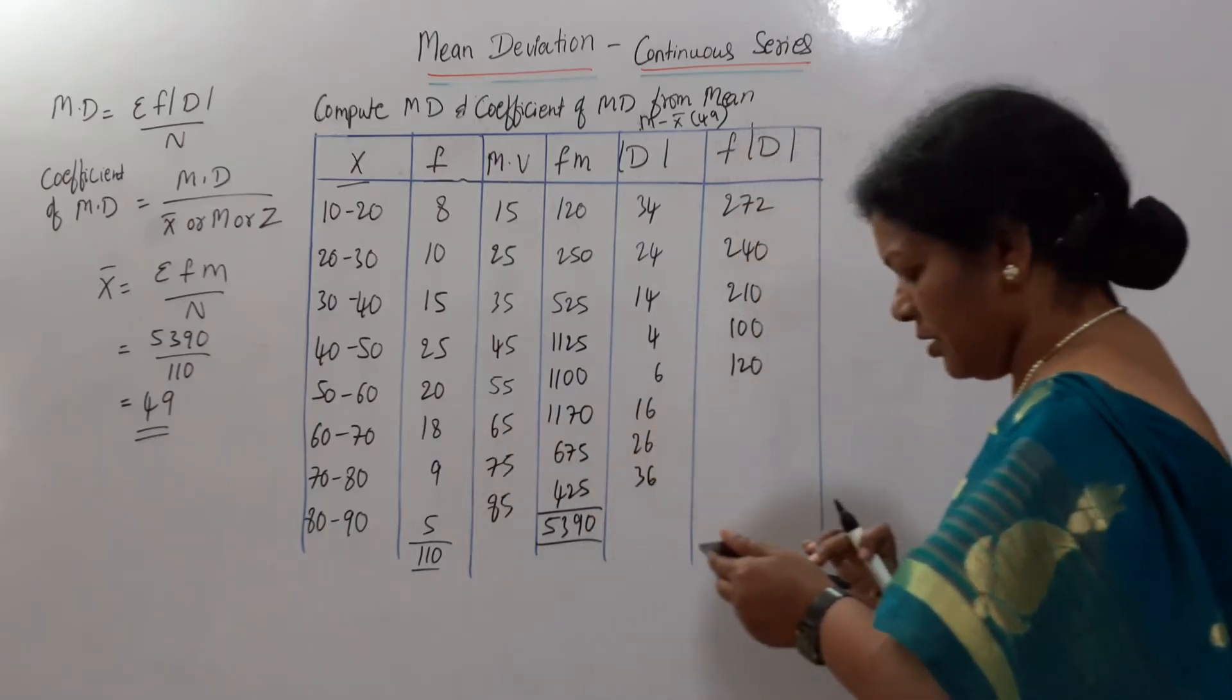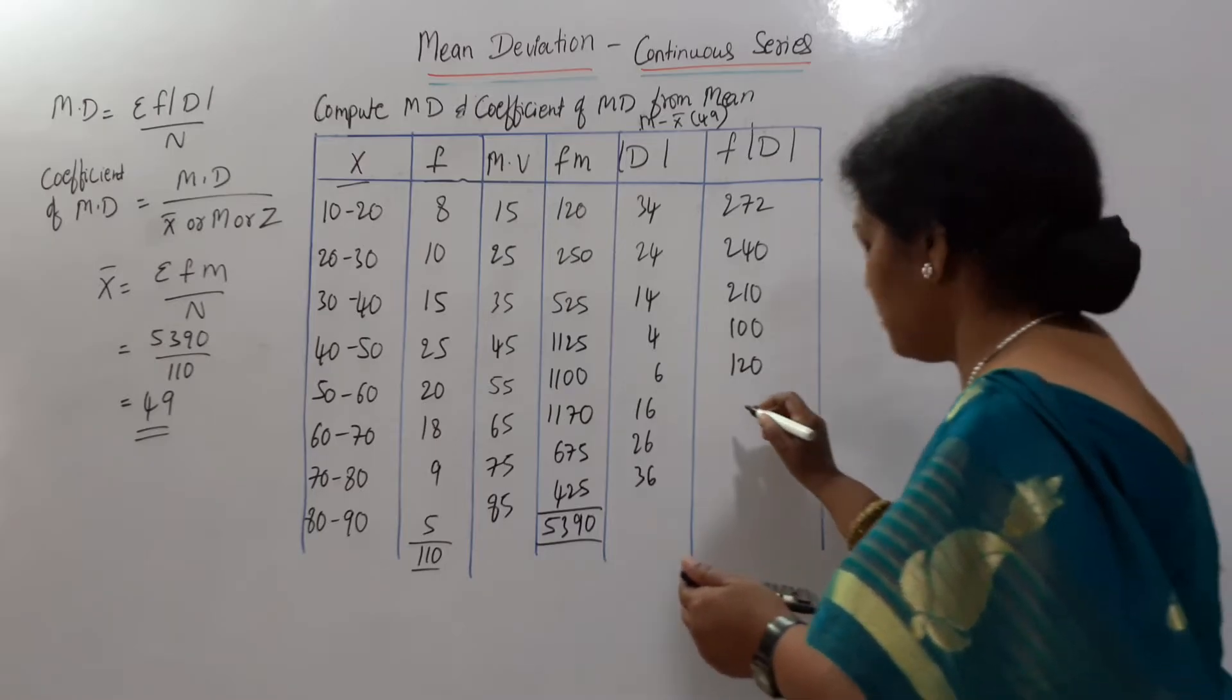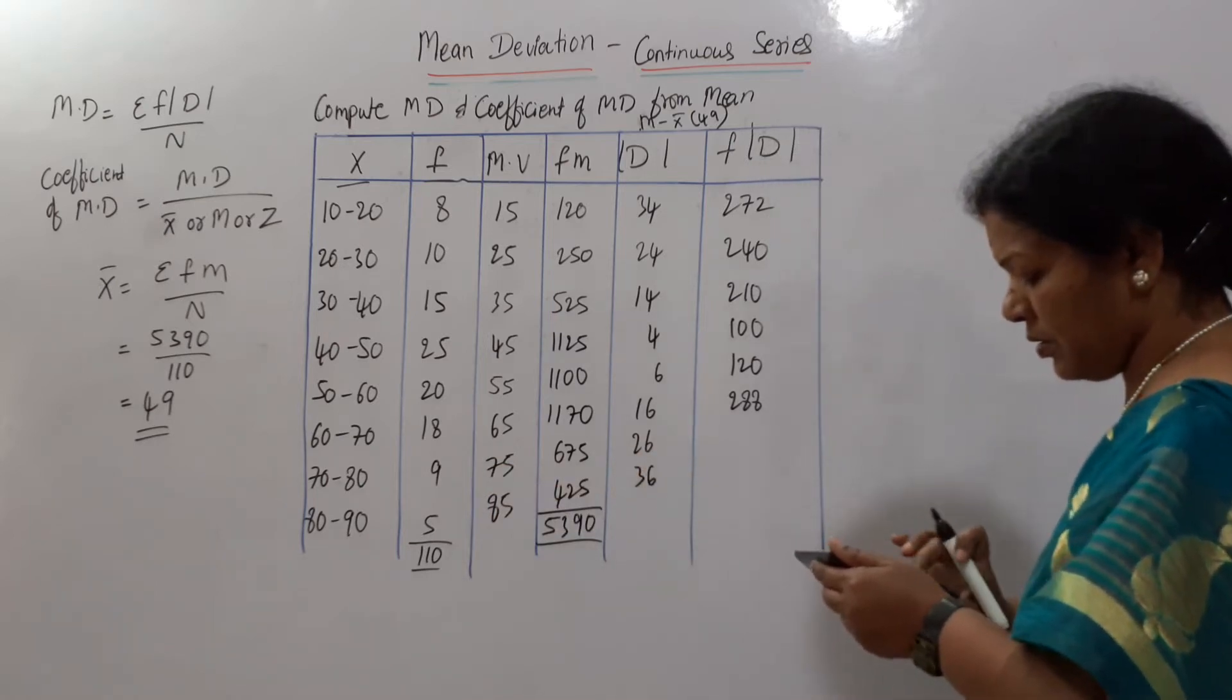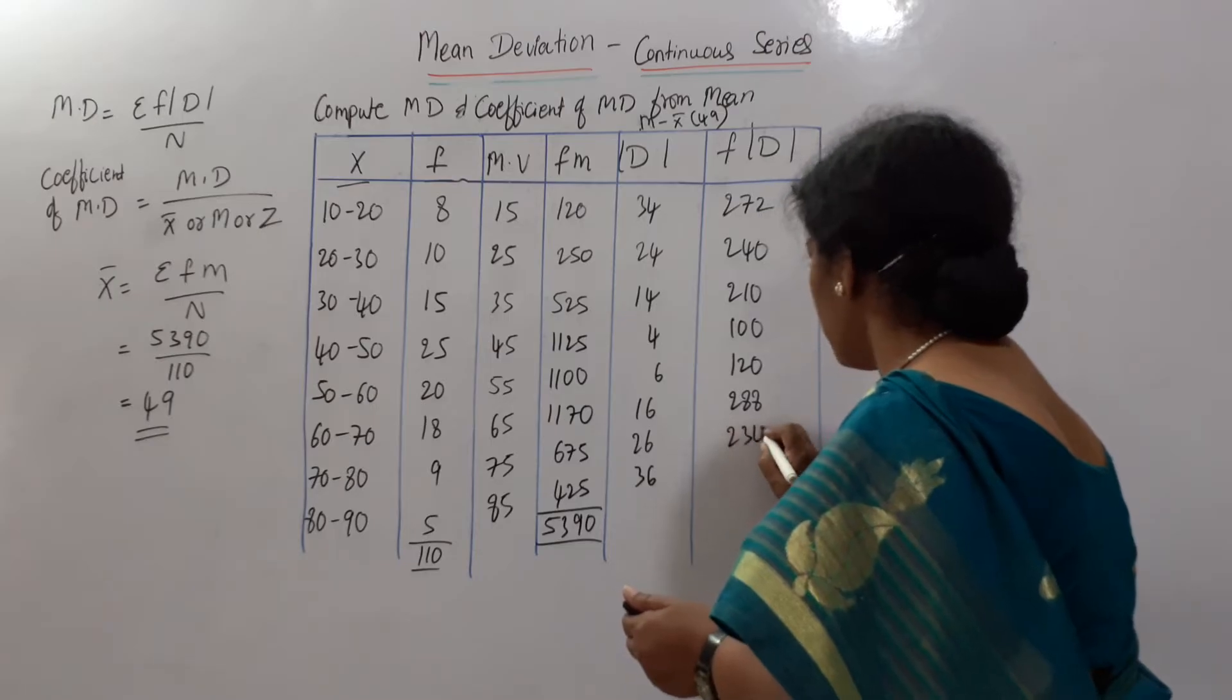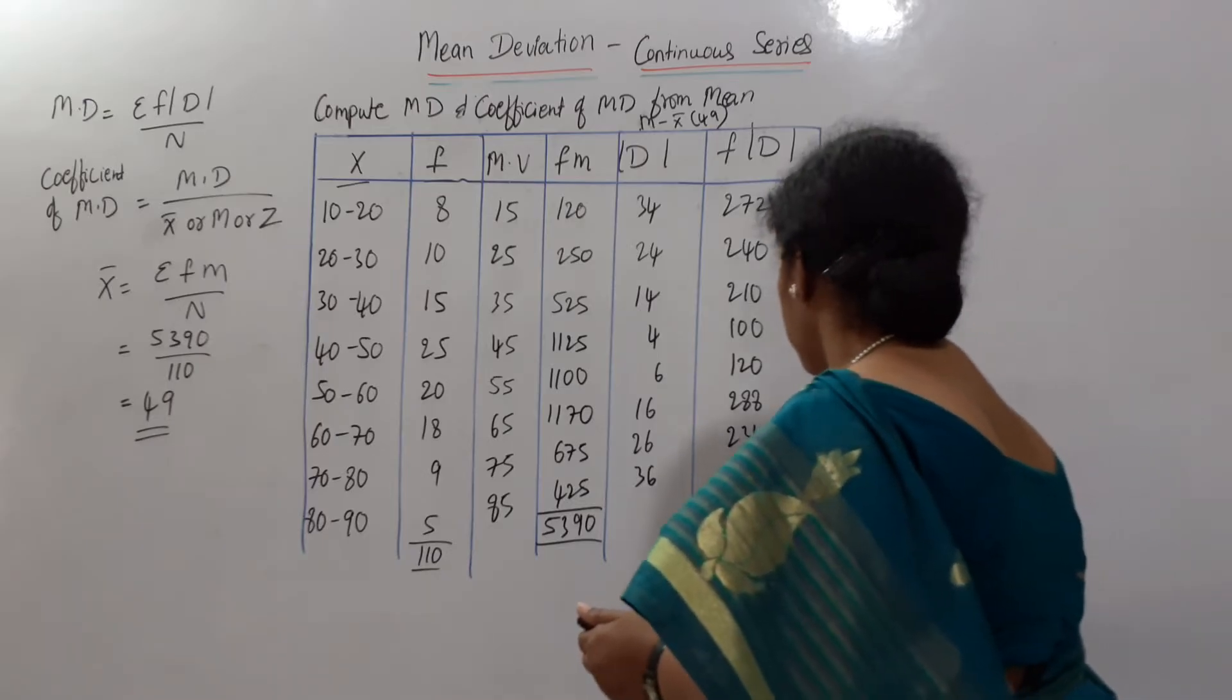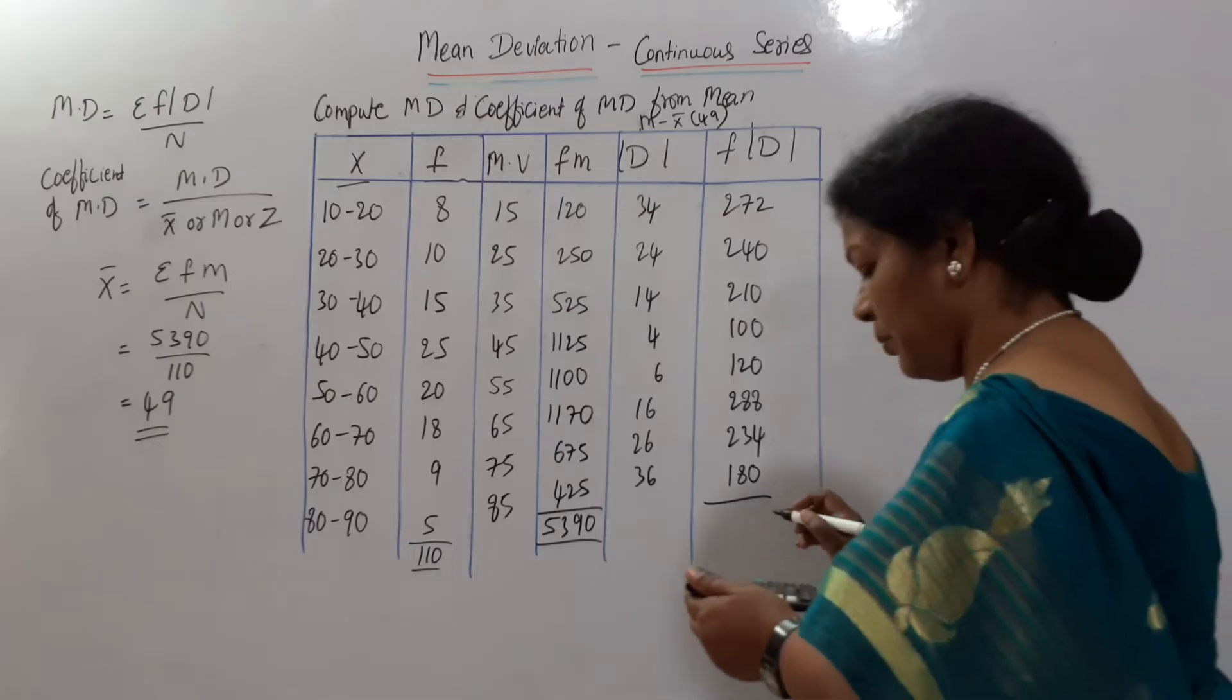18 into 16, 288. 9 into 26, 234. Then 5 into 36, 180. This total is 1644.